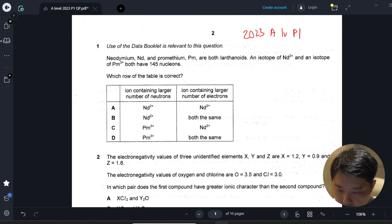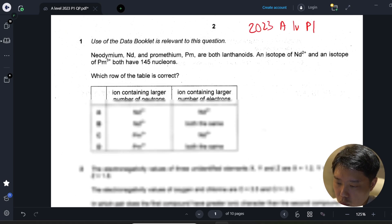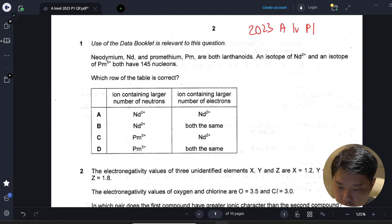Neodymium (Nd) and prometium (Pm) are both lanthanoids. An isotope of Nd²⁺ and an isotope of Pm³⁺ both have 145 nucleons. Nucleons basically means protons plus neutrons. Which row of the table is correct?